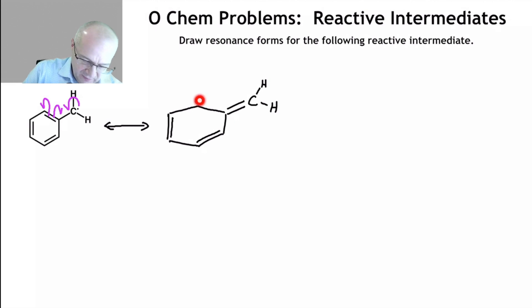Now, don't stop here. We can keep on going, right? Because basically we have the same setup here as we did here. A pi bond adjacent to a radical. Pi bond adjacent to a radical. Same idea. So do it again.